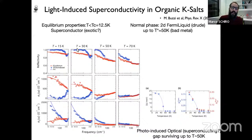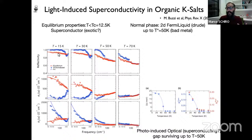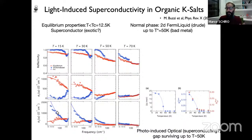Even more striking, recent experiments in the same class showed that by using light one can induce transient superconductivity up to temperatures far higher than expected in thermal equilibrium. Concretely, in these 2D materials the equilibrium transition temperature is around 12K, and the normal phase is a two-dimensional Fermi liquid. But looking at this plot of reflectivity and optical conductivity — blue dots are the photo-induced signal after the pump, red dots the equilibrium signal — up to temperatures of order 50K you see almost perfect reflectivity, an optical gap in the real part of conductivity, and a 1/omega frequency behavior suggestive of an optical gap opening.